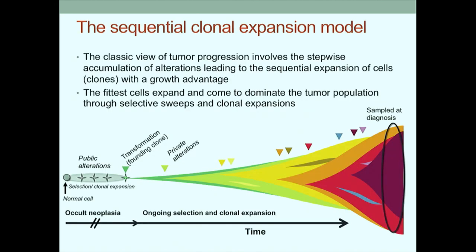In a cartoon schematic: prior to transformation, we have this occult phase during which selection and clonal expansion take place, resulting in the accrual of somatic mutations that become public or clonal in the final tumor. At transformation, we continuously accrue somatic alterations that are now private because they're present in a subpopulation. In this linear or successive clonal expansion model, these clones confer such a strong selective advantage that they out-compete their neighbors. The question is: is this model compatible with the vast majority of cancer genomic data we have in hand?